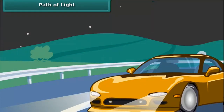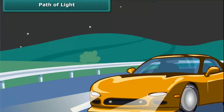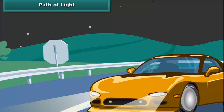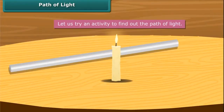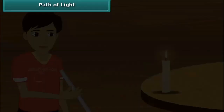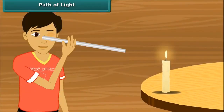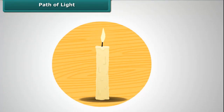Path of Light. Have you ever noticed the headlamps of a car giving straight beams of light? Come, let us try an activity to find out the path of light. Take a lighted candle and a straight pipe. Now look at the lighted candle through that straight pipe. You can easily see the candle from that pipe.